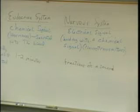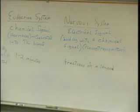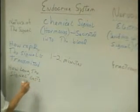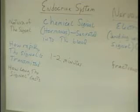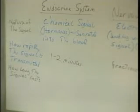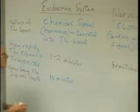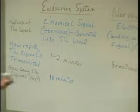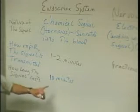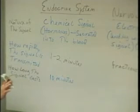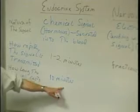How long does the signal last? If we're thinking about an initial secretion of a hormone, how long will that hormone last? There's no magic amount, but a good rough average would be 10 minutes. In many cases with the endocrine system, the hormone will be continually secreted for a little while, but any initial amount of hormone that's secreted probably lasts a good average of 10 minutes.